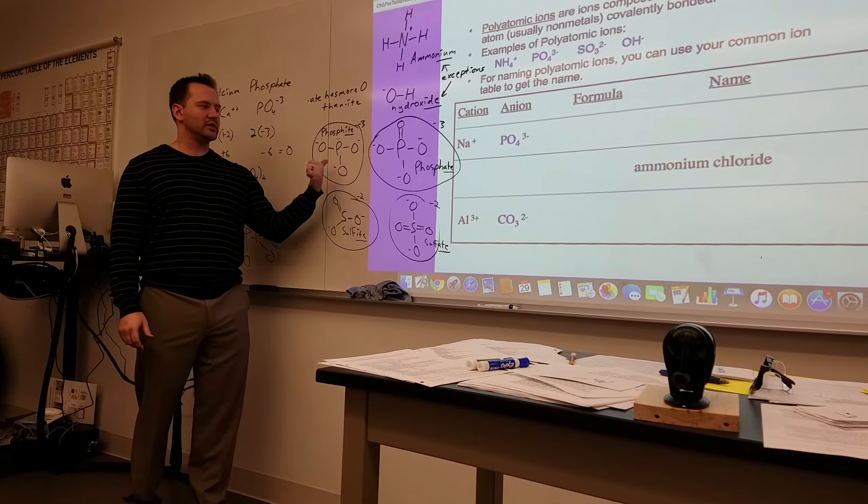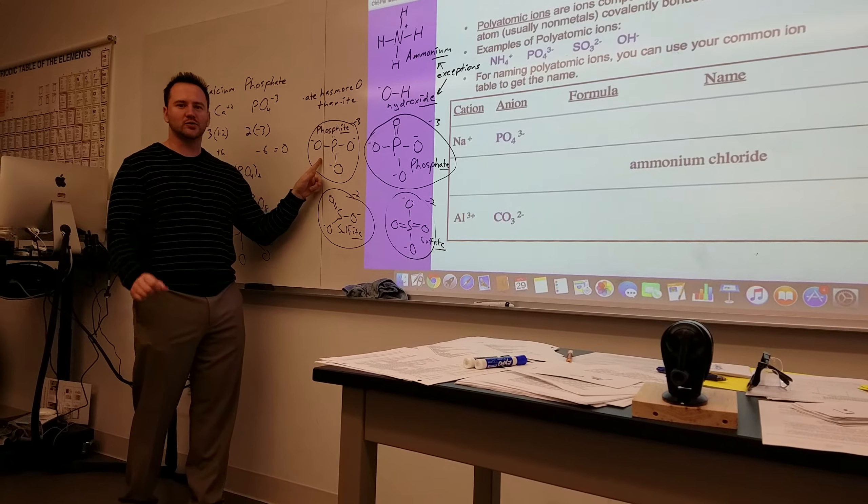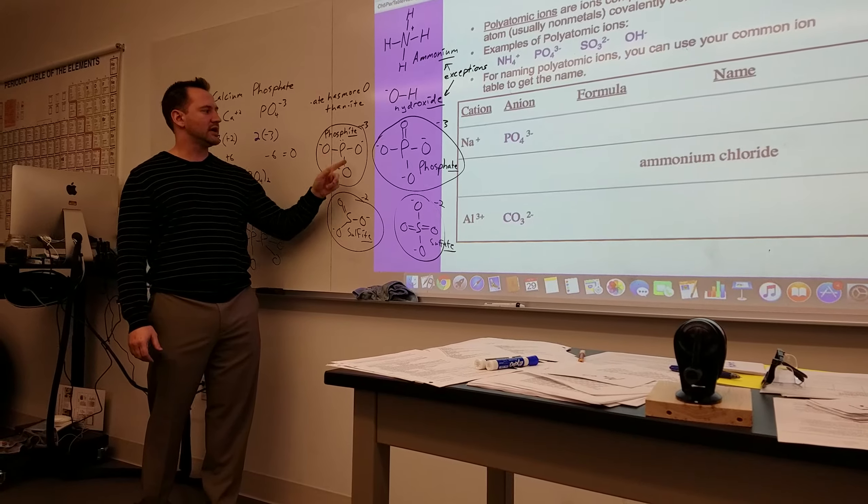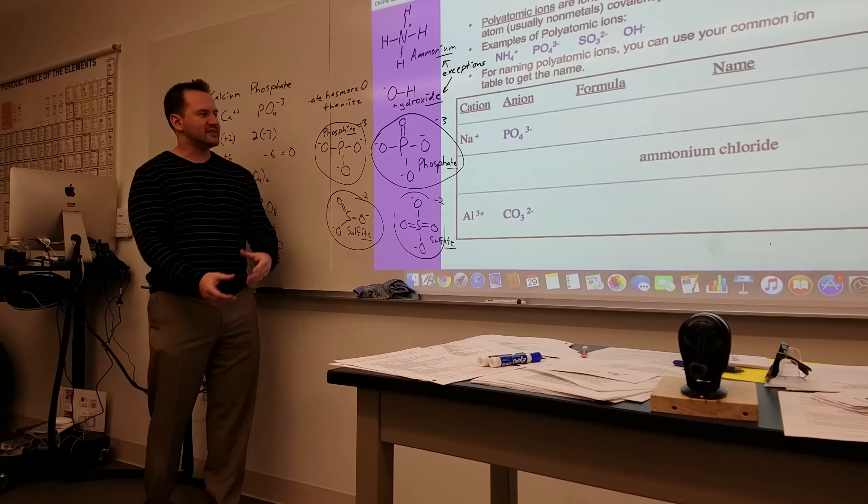Phosphite has one less oxygen. Ate always has more oxygen than ite. So phosphite has one less oxygen, but it has the same charge. You have a phosphorus with three negatively charged oxygens covalently bonded, and those stay together. These don't go changing.